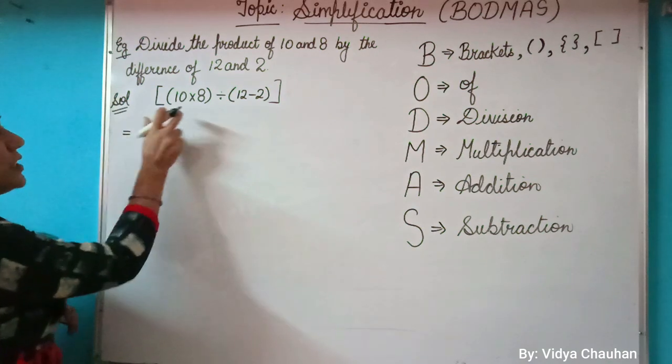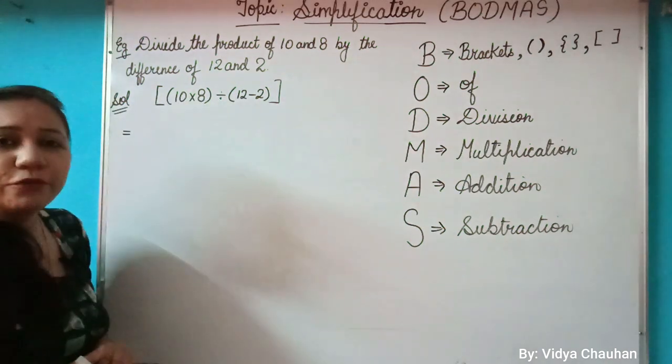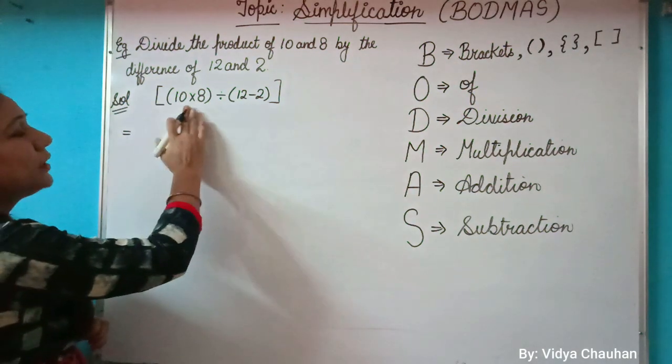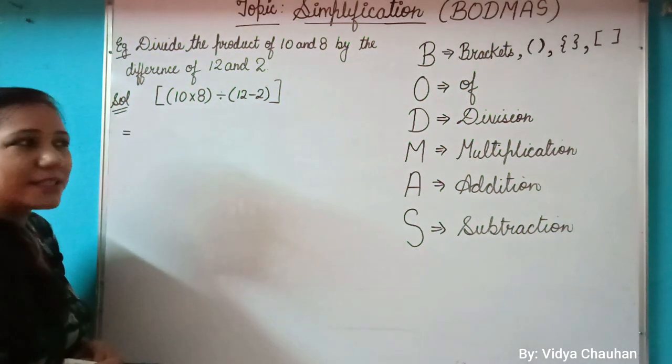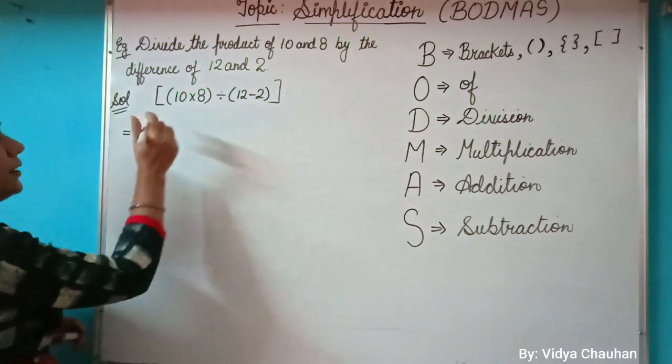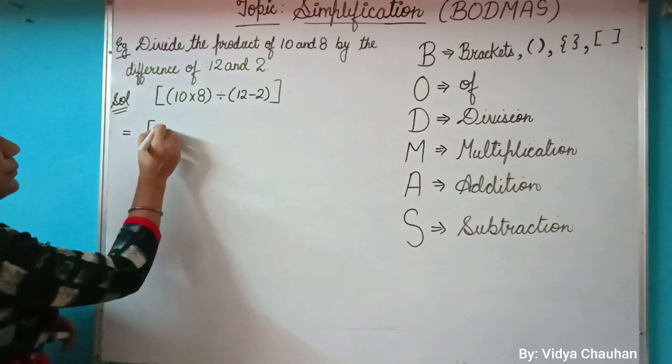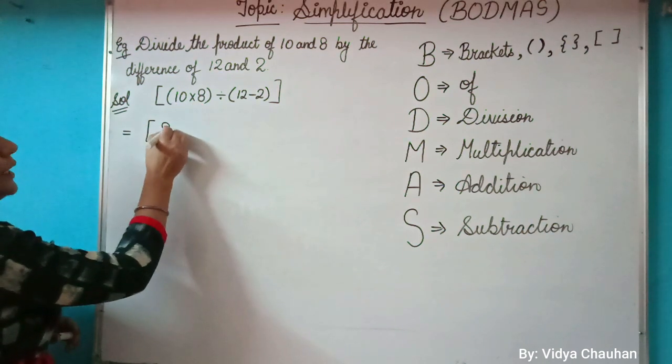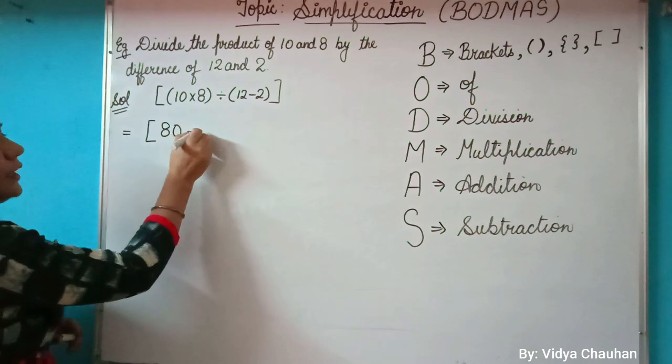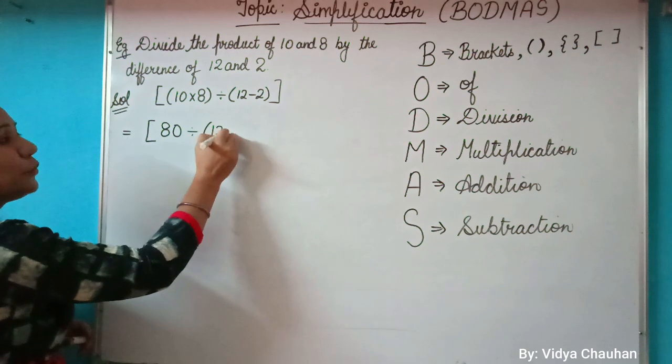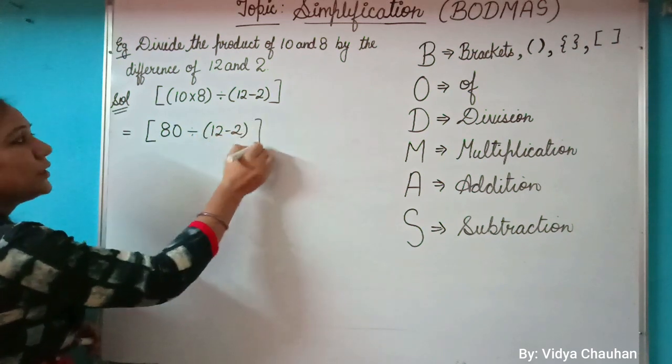Now let us solve. Once we have done the conversion of word problem into numerical format, let us perform the operations. Very first, we will solve the terms inside the brackets, doing it one by one. 10 multiplied by 8 gives you 80 divided by 12 minus 2, which will be as it is. So in that one step we will perform only one operation.